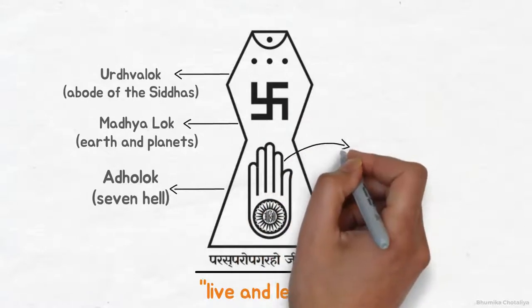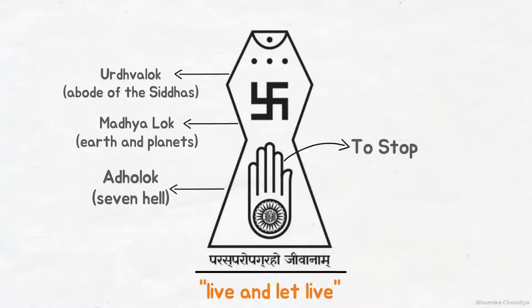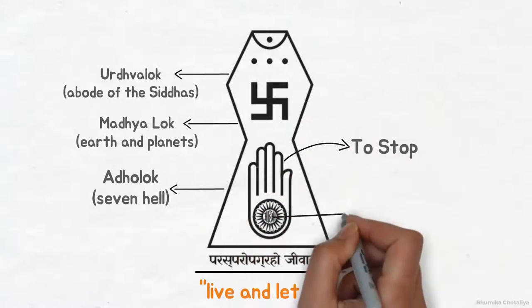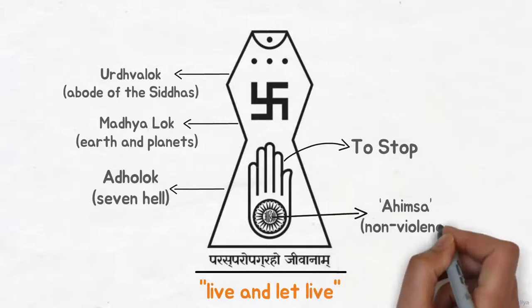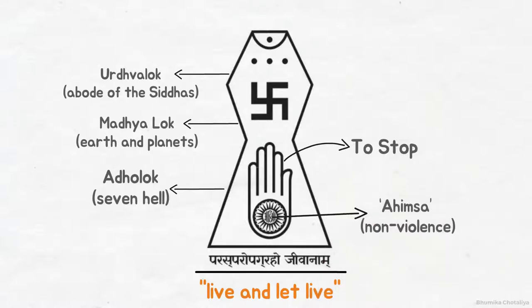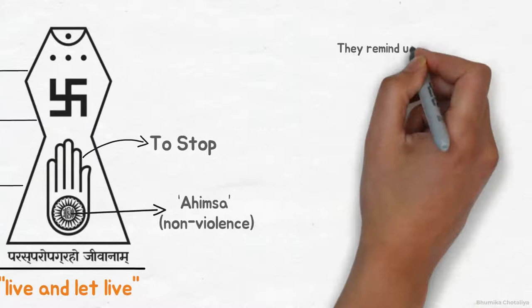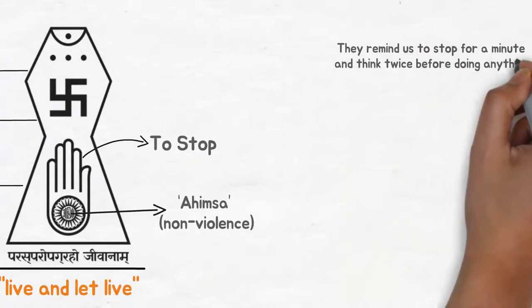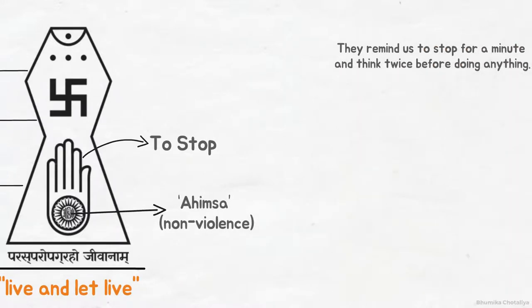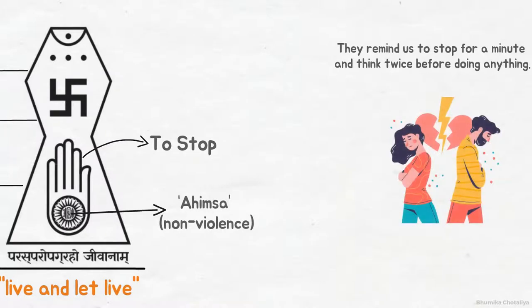The raised hand means stop in fearlessness. The word in the center of the wheel is Ahimsa, which means non-violence. Between these two, they remind us to stop for a minute and think twice before doing anything. This gives us a chance to scrutinize our activities to be sure that they will not hurt anyone by our words, thoughts, or actions.